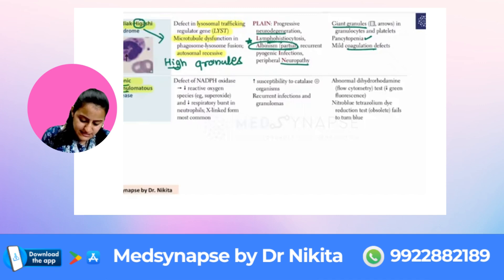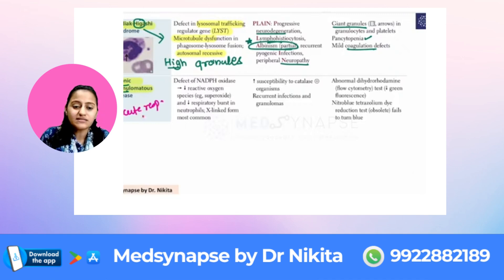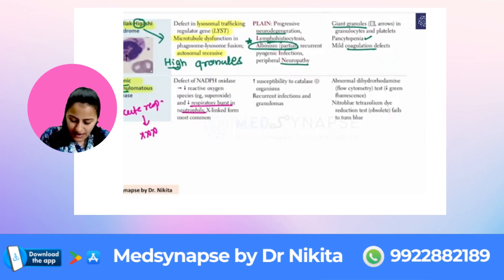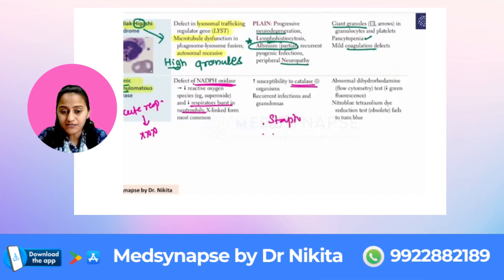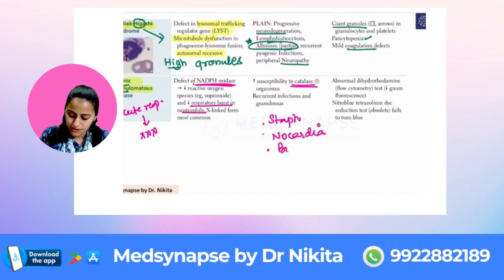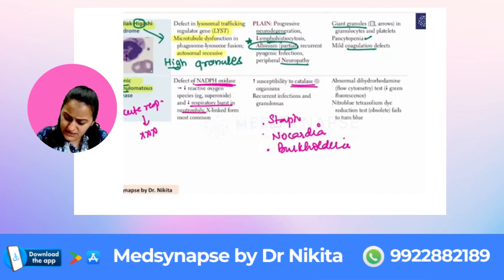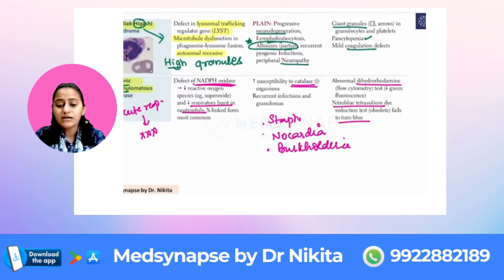Chronic Granulomatous Disease, on the other hand — remember 'chronic granulomas' means chronic infection is what we see here. The acute response to bacterial infection is affected, meaning the respiratory burst in neutrophils is affected — respiration here is oxidation. The NADPH oxidase is defective, so there is increased susceptibility to catalase-positive organisms: Staph aureus, Nocardia, Burkholderia — these are commonly given in questions — and even Candida or Aspergillus. The dihydrorhodamine test is abnormal.